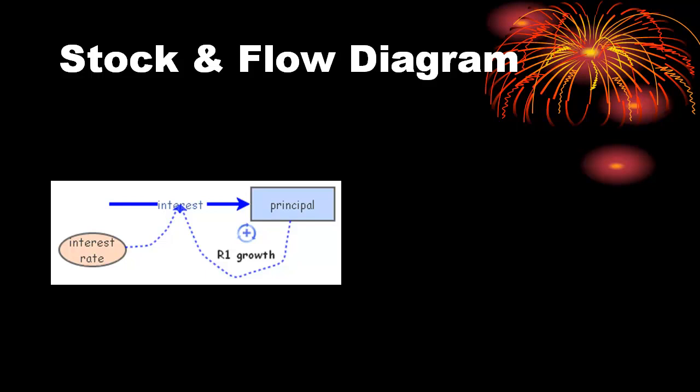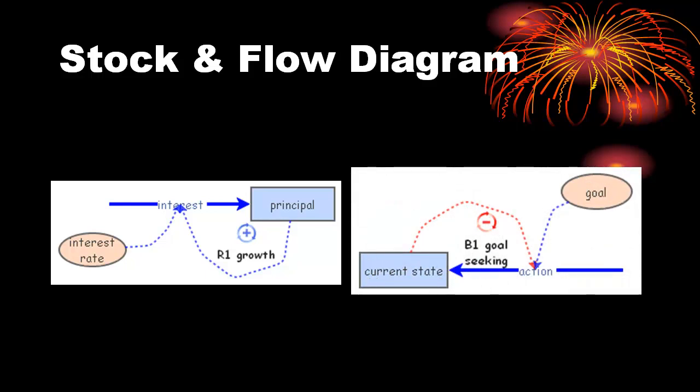This second stock and flow diagram represents the goal-seeking causal loop diagram in the previous slide. What is explicitly different is that action is a flow which adds to the current state. There is a separate video that covers the details of stock and flow diagrams.